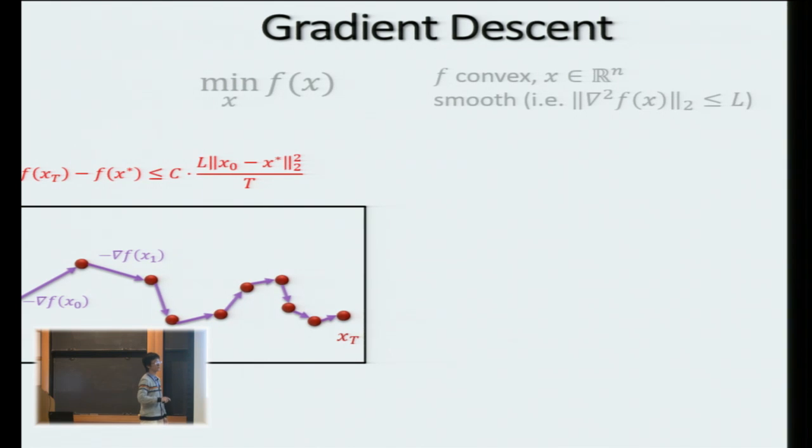one can prove that the convergence rate is proportional to 1 over t. That is, if I do this procedure, t iterations, then the objective distance to the minimizer is proportional to 1 over t. So this constant c is like 2. So don't worry about it.